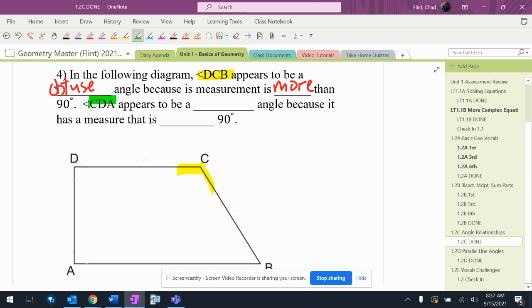Angle CDA appears to be a right angle because it has a measure that is equal to 90.